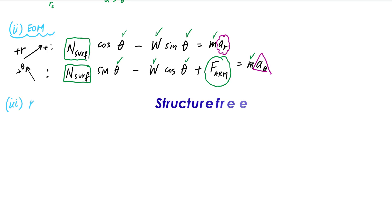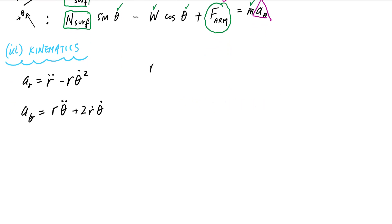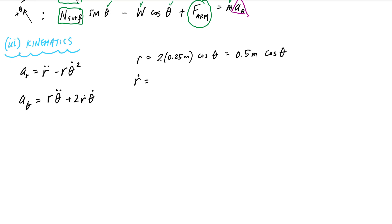From kinematics, I know that a_r equals r-double-dot minus r·theta-dot-squared, and a_theta equals r·theta-double-dot plus 2·r-dot·theta-dot. I'll use these kinematic relationships to determine the accelerations. The radial position equation is r equals 2 times 0.25 meters times cosine of theta, which simplifies to 0.5·cos(theta). Taking the time derivative gives r-dot equals negative 0.5·sin(theta)·theta-dot.